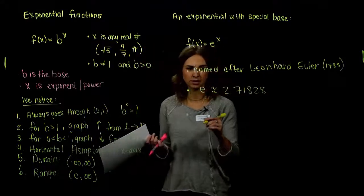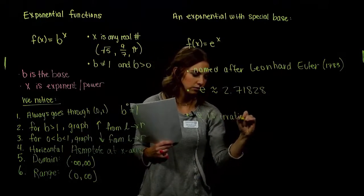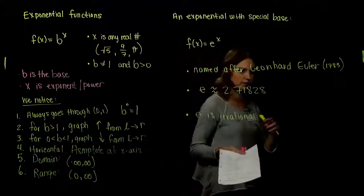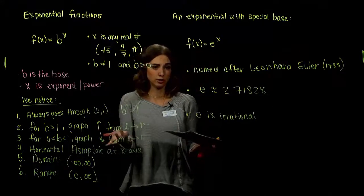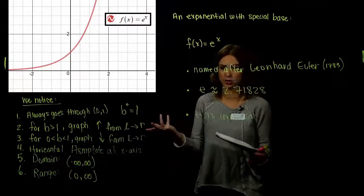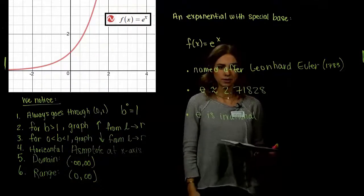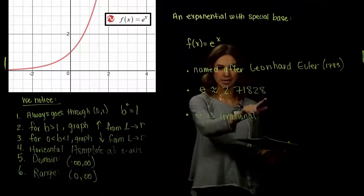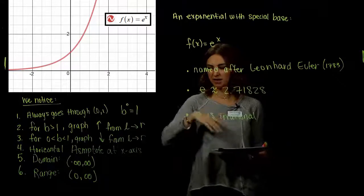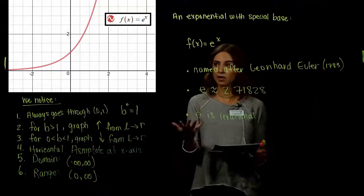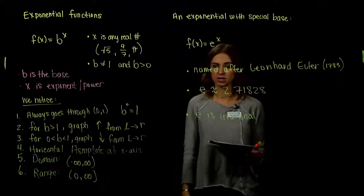With base e, the graph is still exponential and still follows the same rules. Since e to the zero power is 1, it still goes through the point (0, 1). Since e is greater than 1, the graph is increasing from left to right. It has the same domain, the same range, and the same asymptote. If you're ever unsure whether something is exponential, graph it on your calculator and see how it behaves.